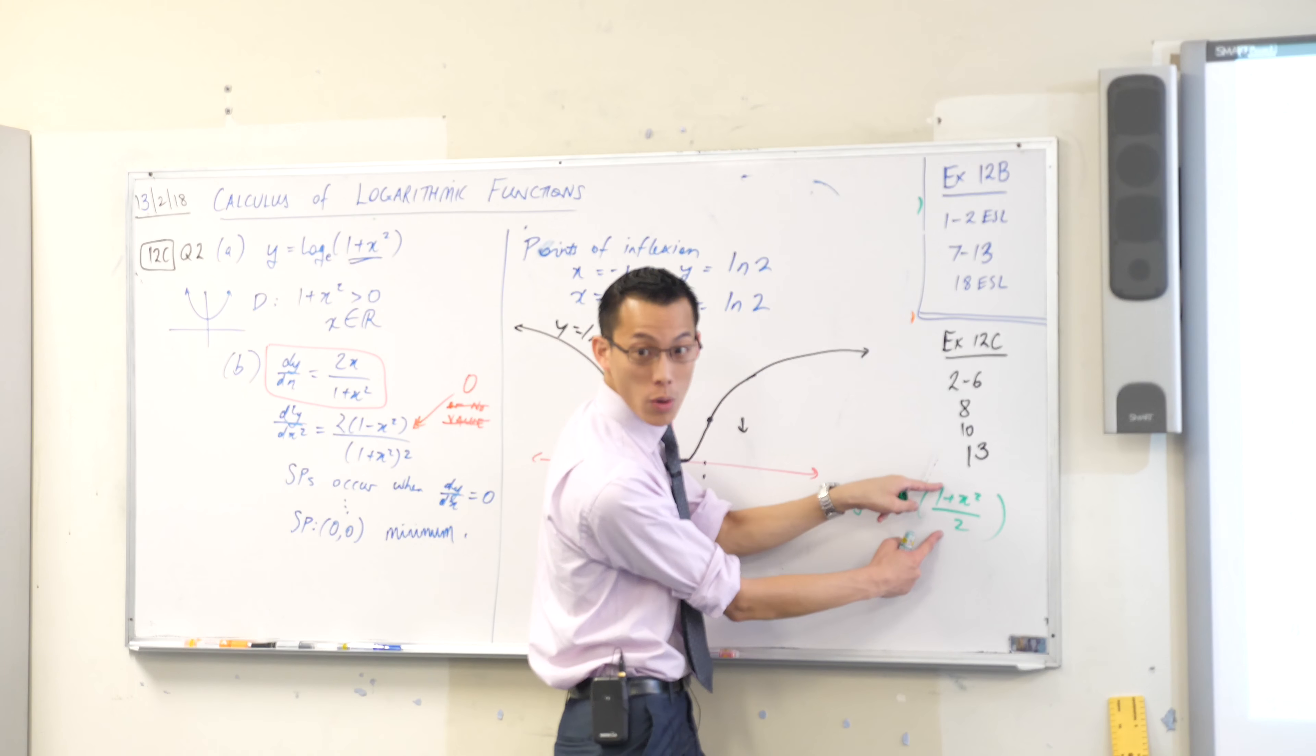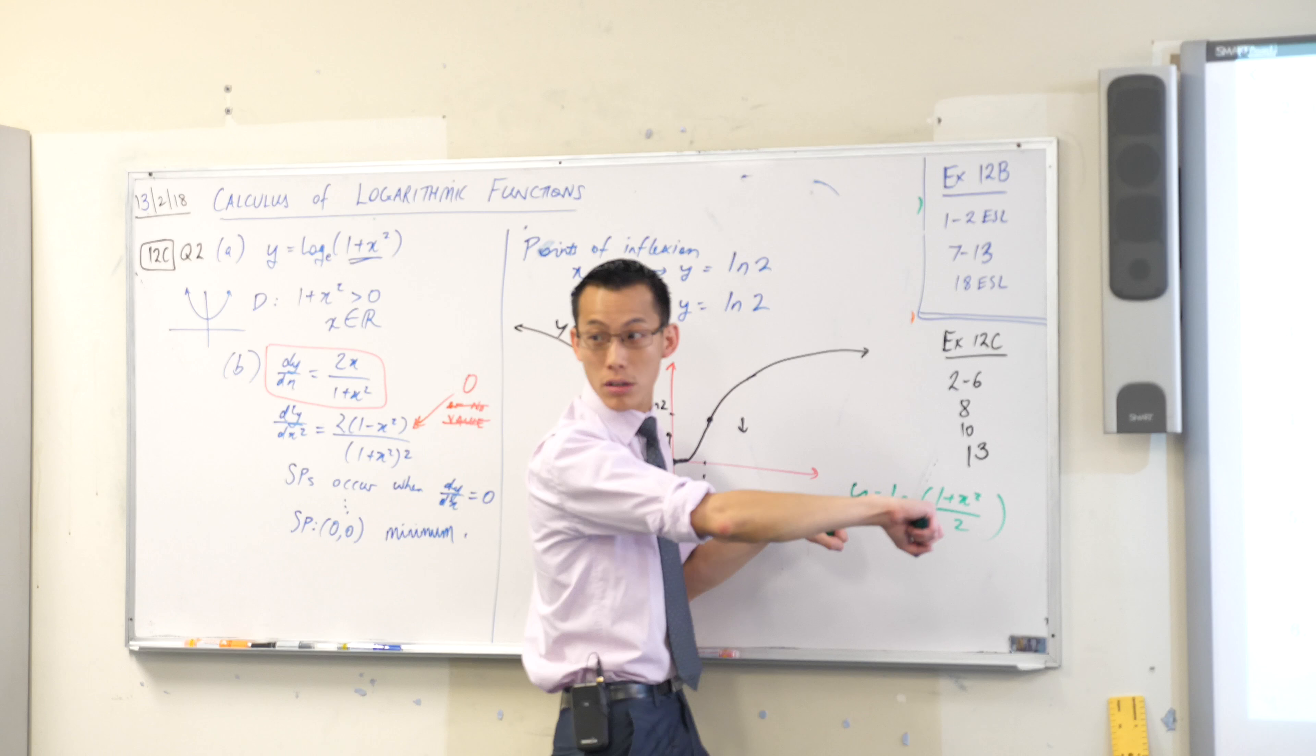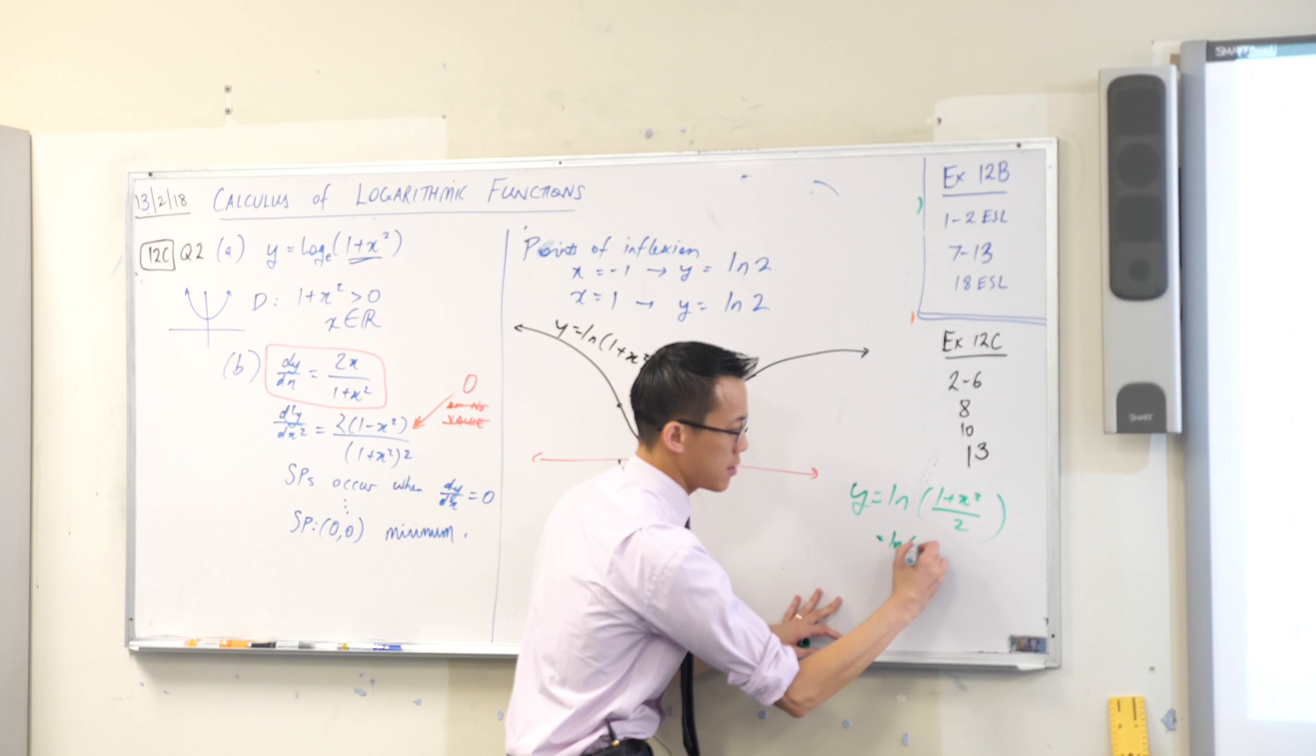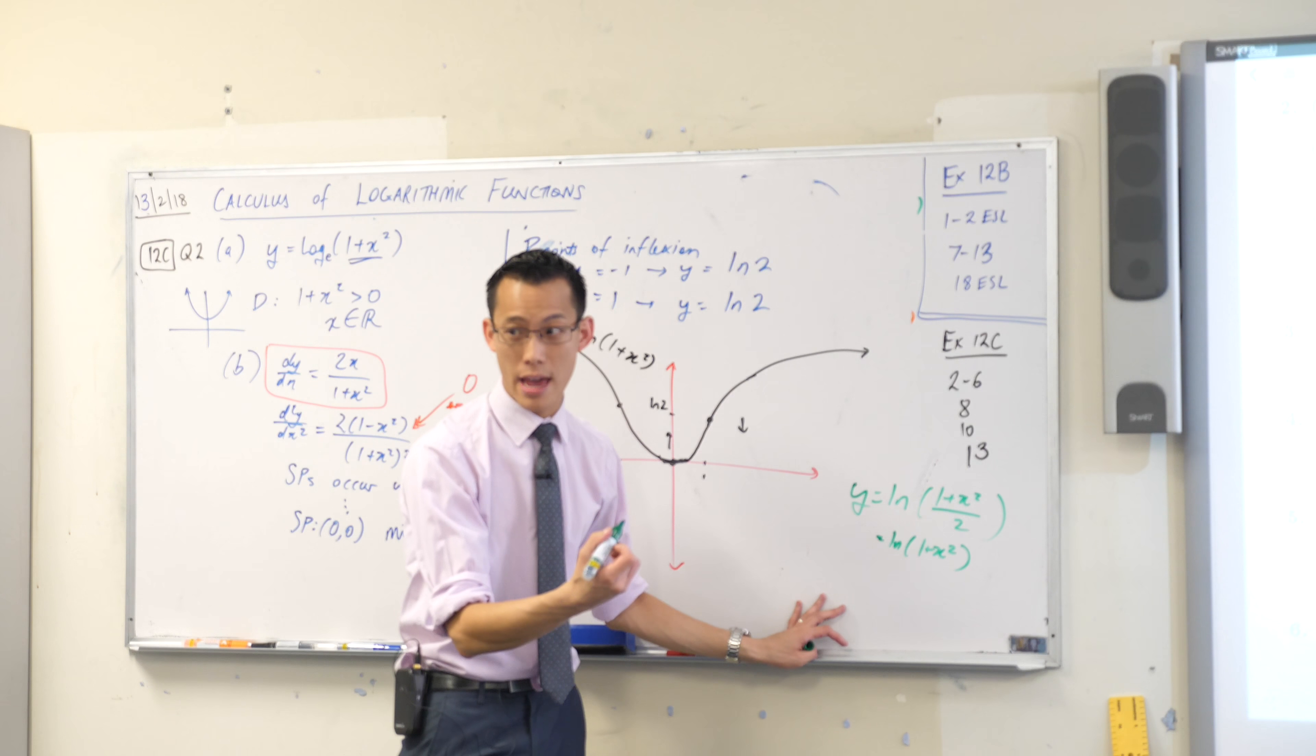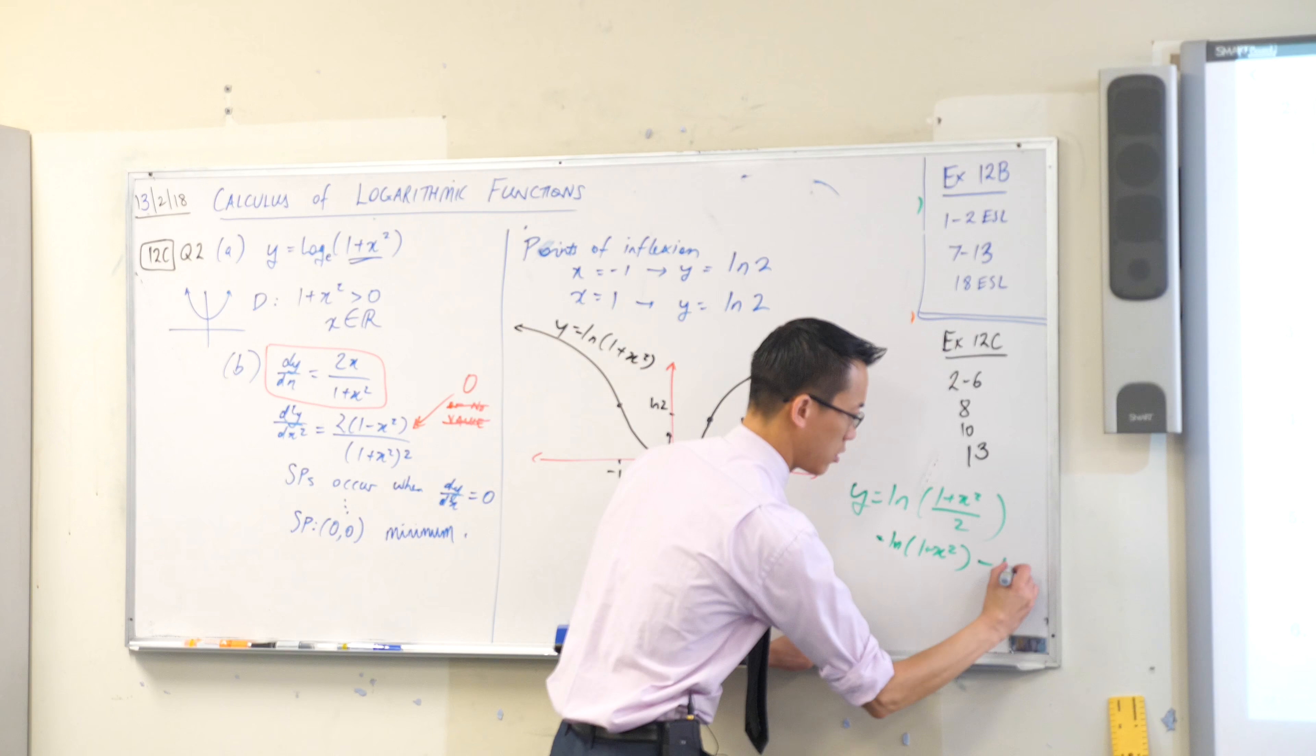Yeah, I can separate this quotient, this log, into two logs. So it's going to be this. Ooh, that looks familiar. Take away log 2.